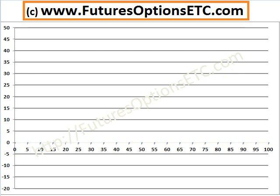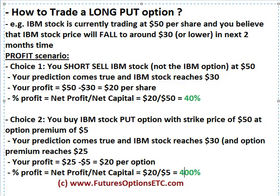In this set of videos we will see how to trade a long put option. A long put option is tradable when you expect the underlying stock price to go down. Assume that IBM stock is currently trading at $50 per share and you believe that IBM stock price will fall down to around $30 or even lower in the next 2 months. What options do you have to trade this scenario?